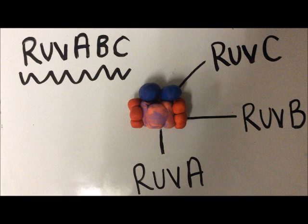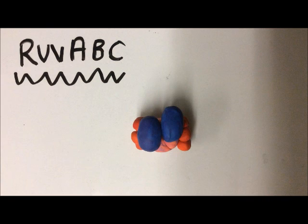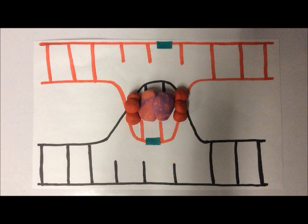The RAV ABC complex recognizes the junction. RAV A recognizes the holiday junction and recruits RAV B. RAV C is a resolving endonuclease.